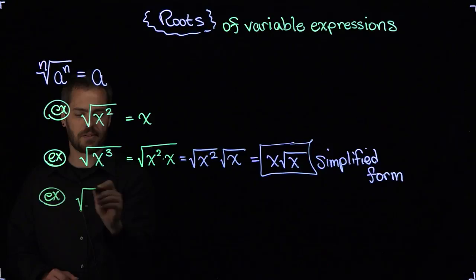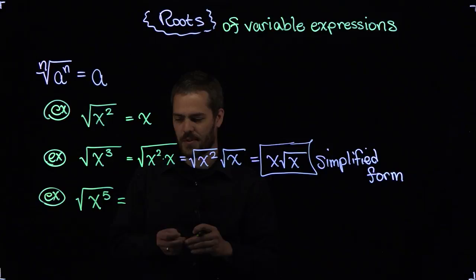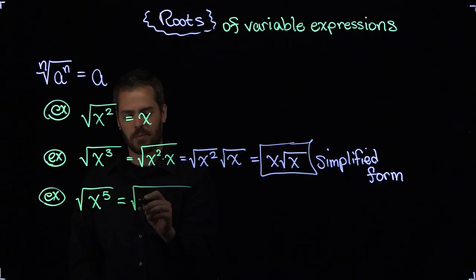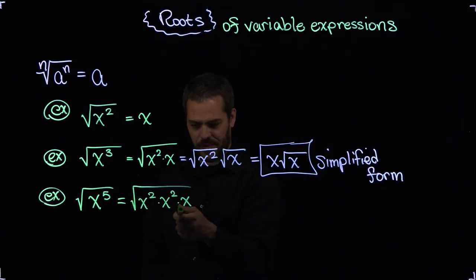But let's increase that power of x. So let's do the square root of x to the fifth power. And again, the interesting thing I'm asking is how many x squared terms do I have? And we'll look at this in a couple different ways, but here's one way to look at it. Suppose I did x squared times x squared times x. Clearly there are two x squared factors and then the x there on the end.